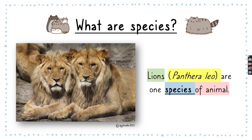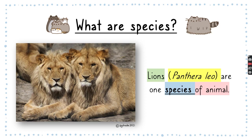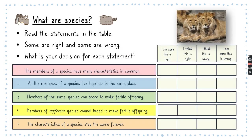So what are species? This right here is called a lion and its scientific name is Panthera leo, and they are one species of animals. So what are species when we say lions are a species? Let's try to read the statements in the table.